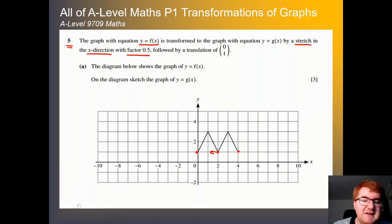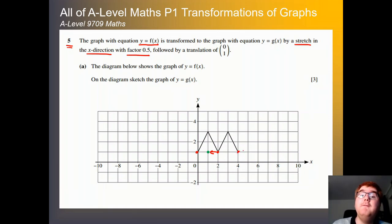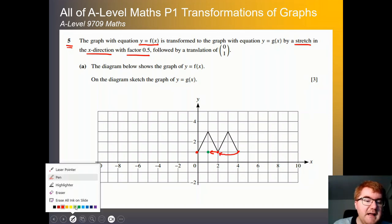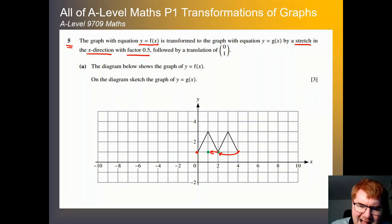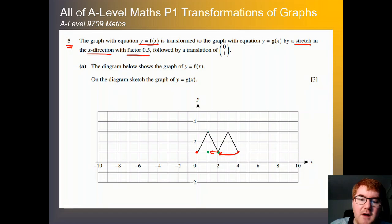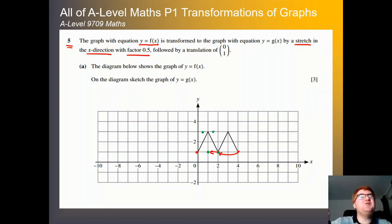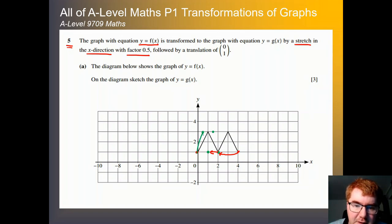Going from the red to the green, this point comes to here. If we take the point at 4, half of 4 is 2, so this point transforms to here in green. The same happens at the top. The point at 1 goes to a half. The point at 3 goes to 1.5. The effect is a squashing effect. Drawing in the new function in green, we get a more squashed function.